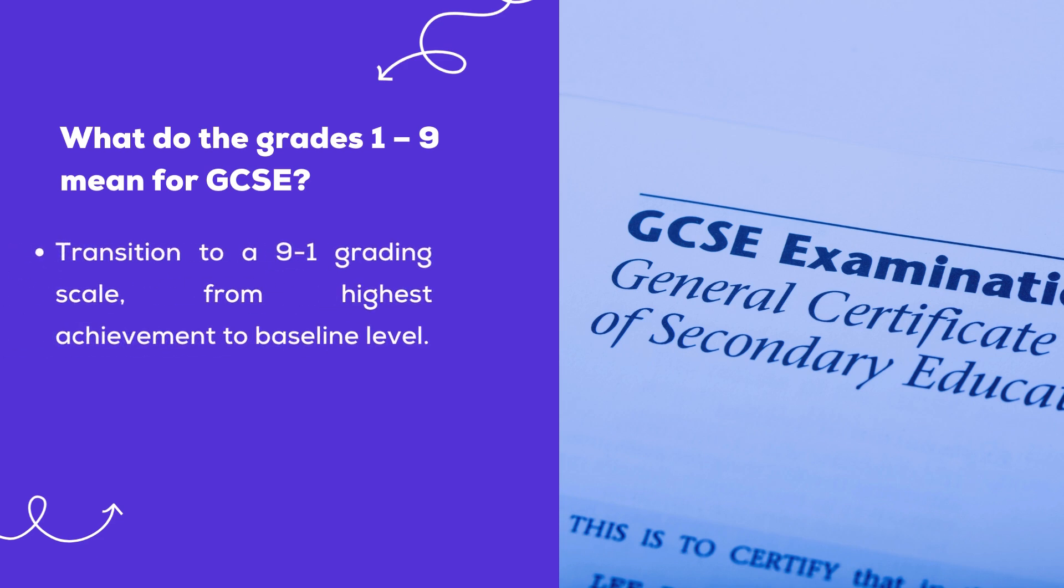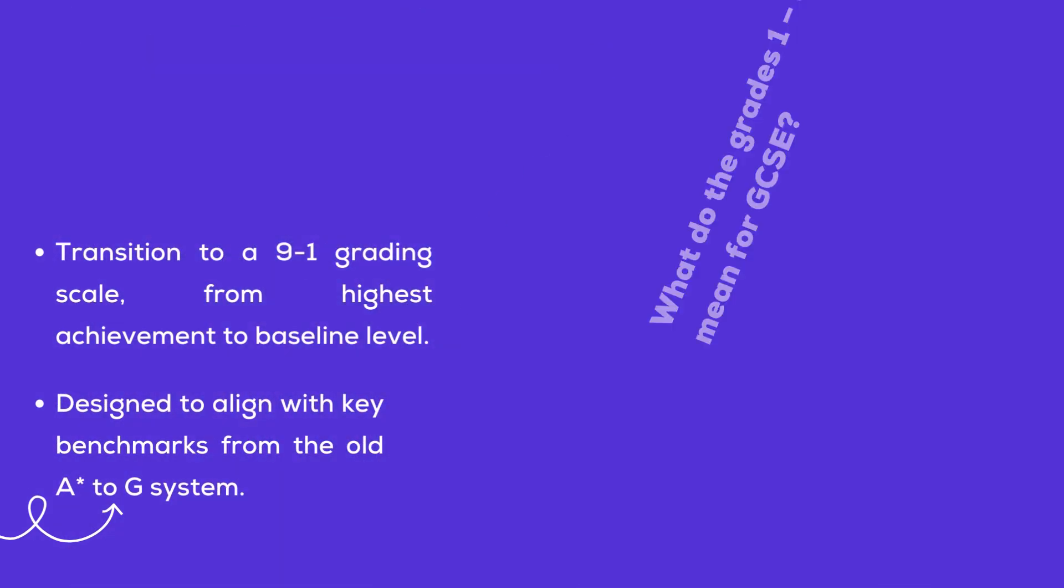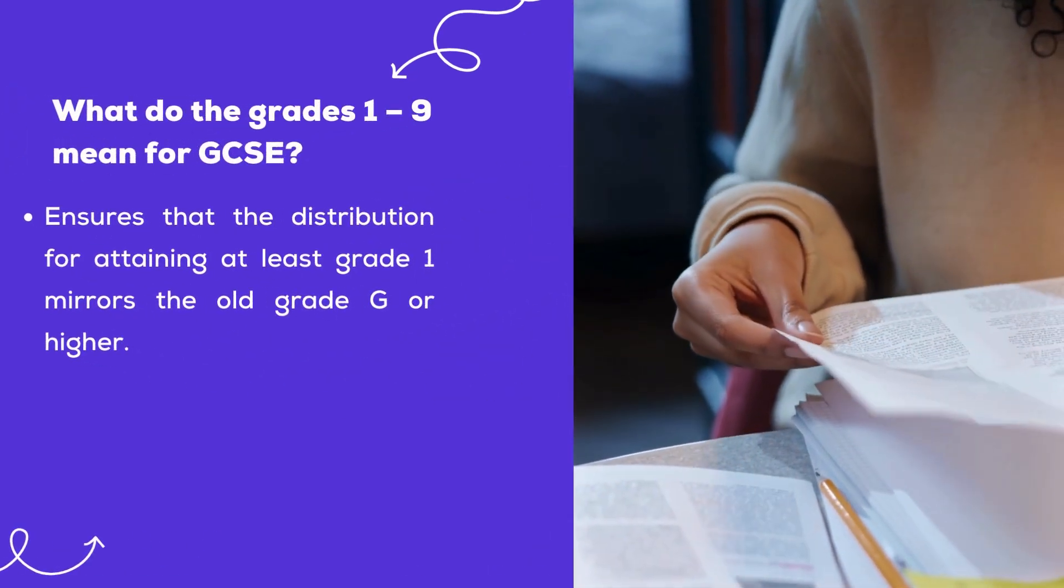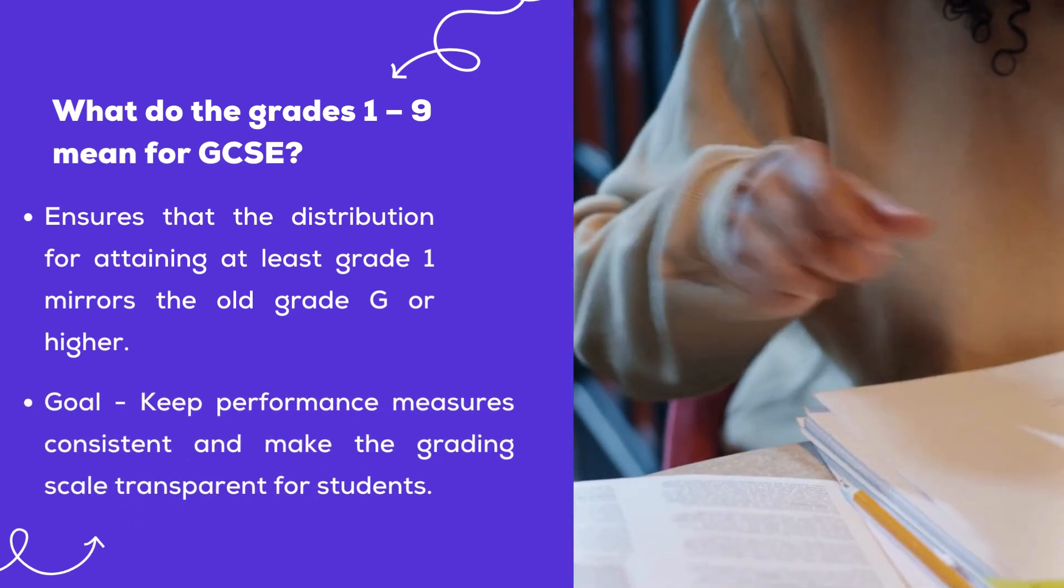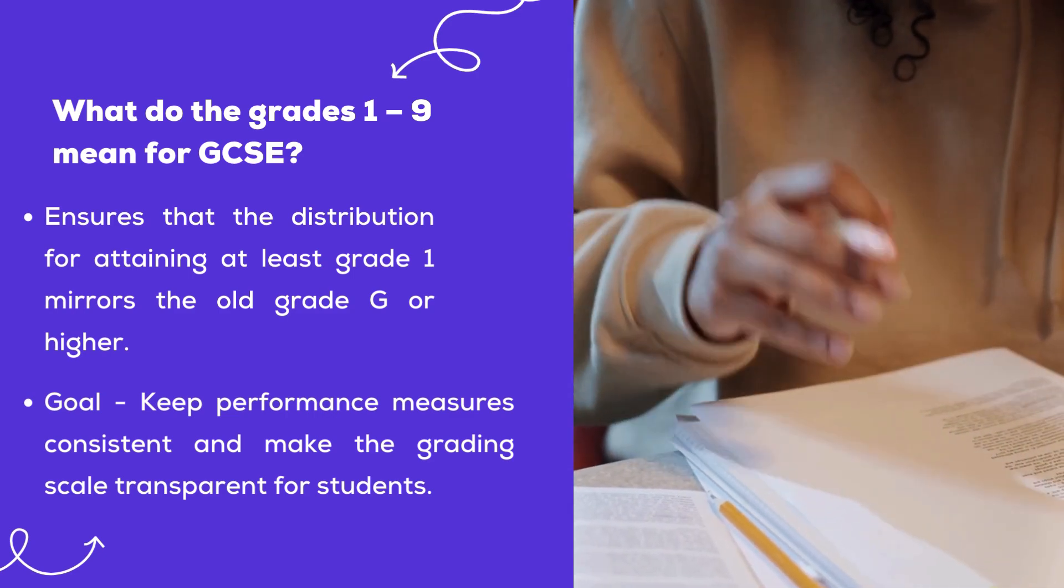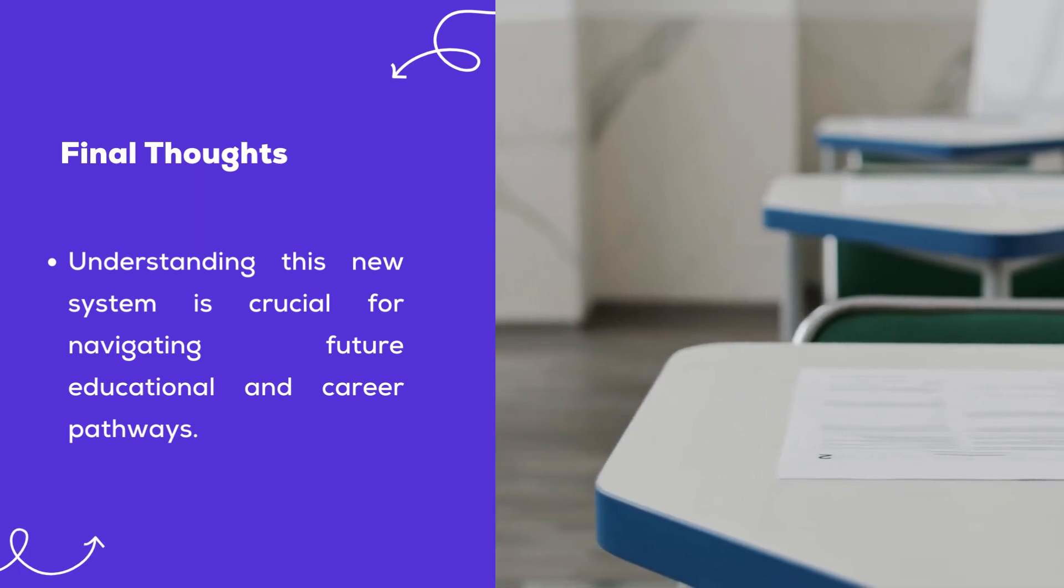What do the grades 1 to 9 mean for GCSE? Transition to a 9 to 1 grading scale from highest achievement to baseline level, designed to align with key benchmarks from the old A* to G system. This ensures that the distribution for attaining at least grade 1 mirrors the old grade G or higher. The goal is to keep performance measures consistent and make the grading scale transparent for students.